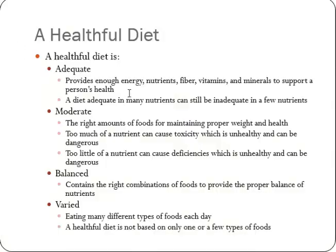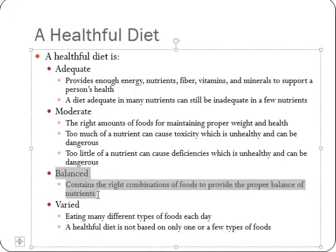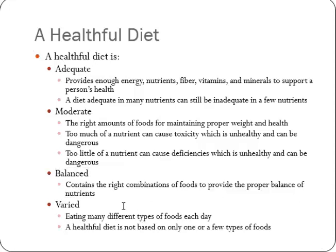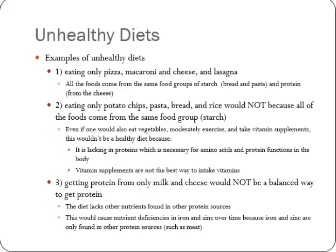A healthful diet is adequate, which means it provides enough energy, nutrients, fiber, vitamins, and minerals — all the things the body needs to survive. On the other hand, it's also moderate, meaning it doesn't have more than it needs and maintains proper weight and health. Too much of a nutrient can cause toxicity, like too much of the fat-soluble vitamins, and too little can cause deficiencies. What you want is balanced — the right combination of foods to give you the right combination of nutrients — and also varied. You want to eat many different types of food because no single food, no matter how healthy, will give you all the nutrients you need.